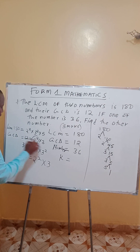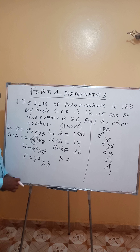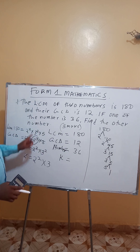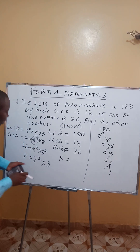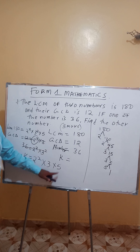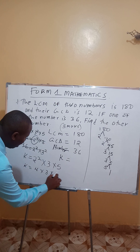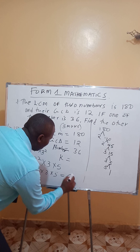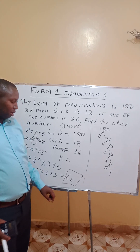Now you are left with 5. The number 36 has only factors 2 and 3, so 5 is not coming from 36. In the LCM we have a 5, which is the highest power, and since 36 doesn't have 5, automatically the 5 must be coming from K. So K must have a 5. Therefore K equals 2 power 2 times 3 times 5, which is 4 times 3 times 5 — that is 12 times 5, which equals 60. The required second number is 60.